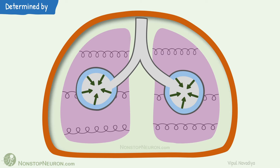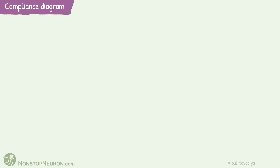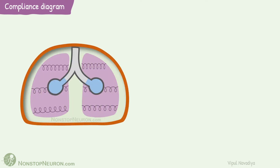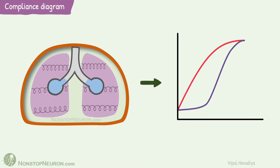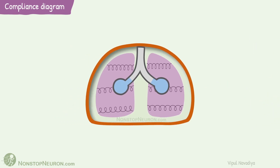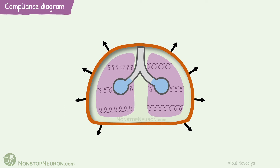The higher these elastic forces, the harder it is to expand the lungs, or the lesser the compliance. Now let's see the compliance diagram of lungs. This is a collapsed lung — the elastic fibers are contracted and kinked, and airways are completely collapsed. An increase in transpulmonary pressure in the initial phase does not expand the lungs much. The reason is the very high surface tension of these completely closed airways. When lungs are collapsed, surfactants are minimal, so surface tension is high and it takes extra effort to overcome it.